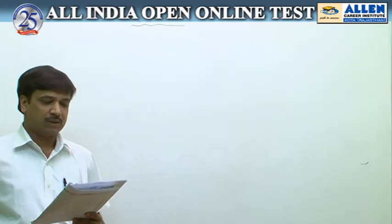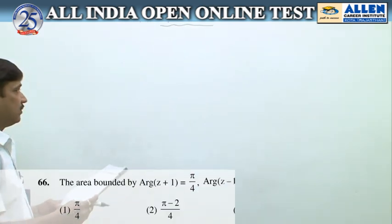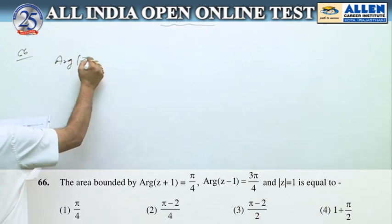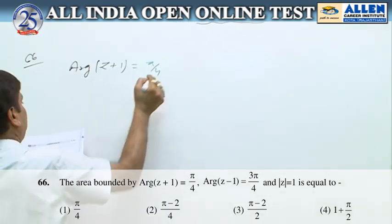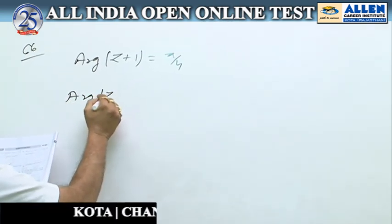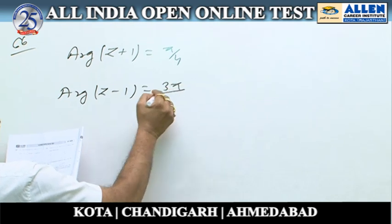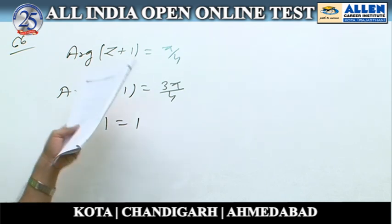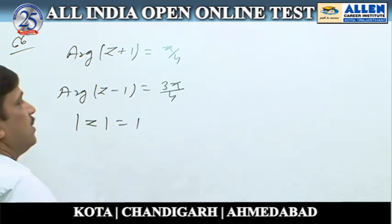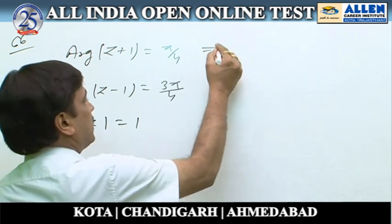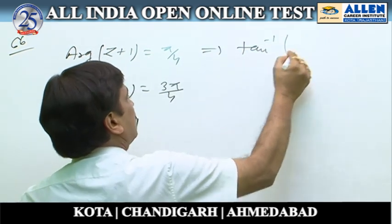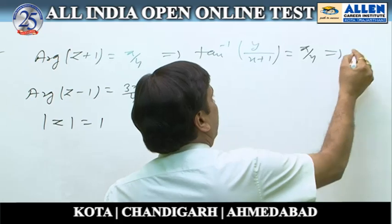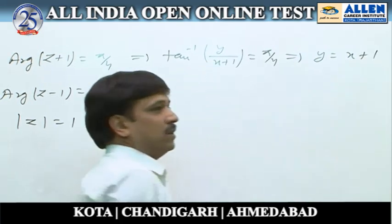In question number 66, it is given that argument of z plus 1 is equal to π/4, argument of z minus 1 is equal to 3π/4, and modulus of z equals 1. We are asked to find the area bounded by these three curves. If we put z equal to x plus iy, then tan inverse of y upon (x+1) equals π/4, which gives y = x + 1, the equation of a straight line.